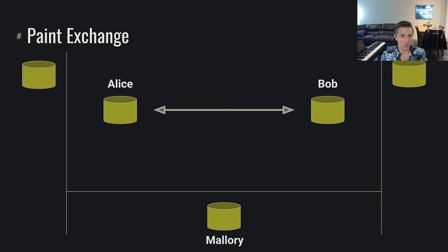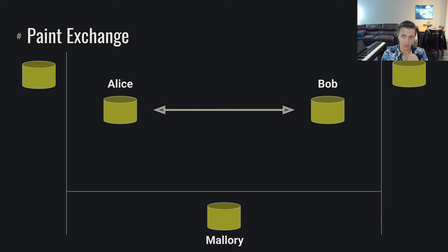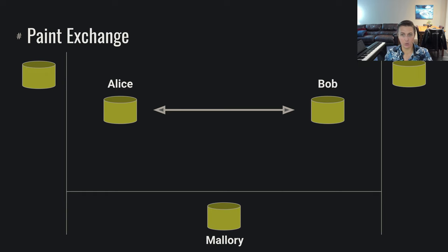Alice and Bob agree to some random color, and in doing so they must communicate with each other, which means Mallory also has the ability to know that color. On the left side we show all the colors Alice knows, on the right side all the colors Bob knows, and on the bottom all the colors Mallory knows. Mallory knows the yellow as well because they've reached this consensus together by discussing it.